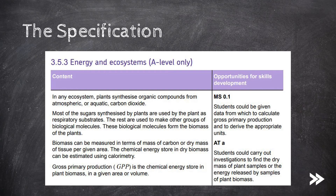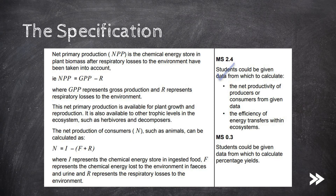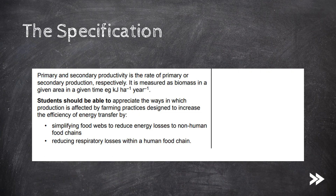So that would be this part of the specification covered. We've covered the introduction to energy and ecosystems, the definition of biomass and how to calculate it experimentally, GPP and NPP definitions, how to calculate NPP and how it is available for plant growth, reproduction, and other trophic levels such as herbivores and decomposers. We've also covered net production of consumers and how to calculate it. Finally, we've considered primary and secondary productivity, how it is measured, and how farming practices are designed to increase the efficiency of energy transfer.